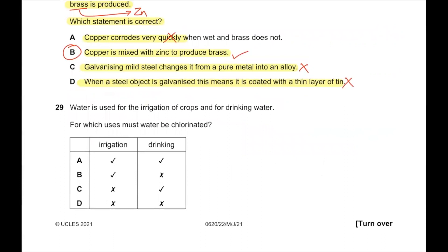Question number 29. Water is used for irrigation of crops and for drinking water. For which use must water be chlorinated? For irrigation, water does not need to be super pure — it can have bacteria and that is fine, so chlorination is not needed. For drinking water, chlorination is definitely important. Question number 29, C is the correct answer.